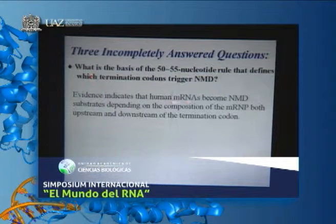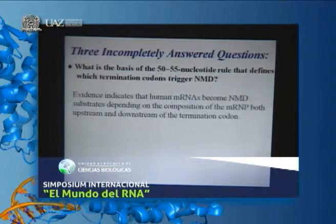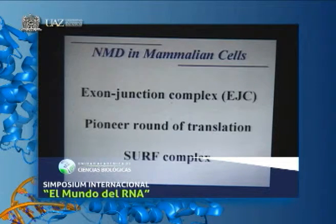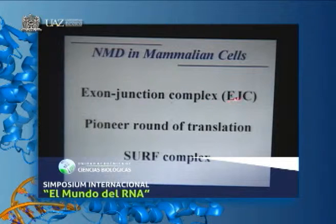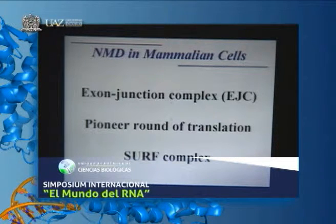Now I want to focus on three incompletely answered questions. The first is: what is the basis for the 50-55 nucleotide rule that defines which termination codons trigger NMD? Evidence indicates that human mRNAs become NMD substrates depending upon the composition of the mRNA—depending upon what proteins are bound both upstream and downstream of the termination codon. In order for that to become clear, I need to talk about three terms: the exon junction complex (EJC), the pioneer round of translation, and the SURF complex.